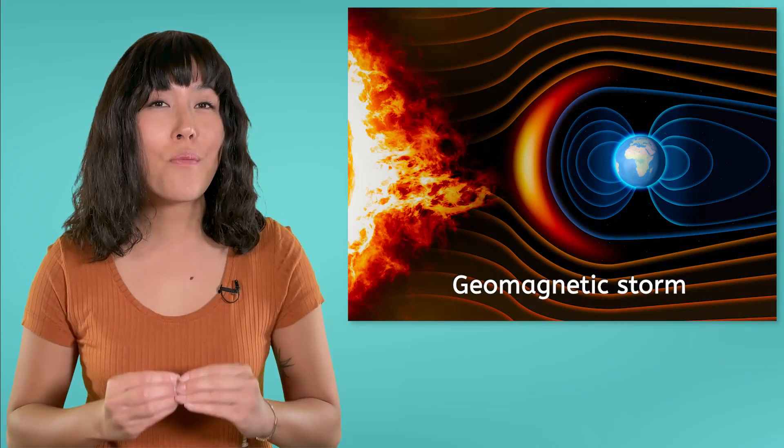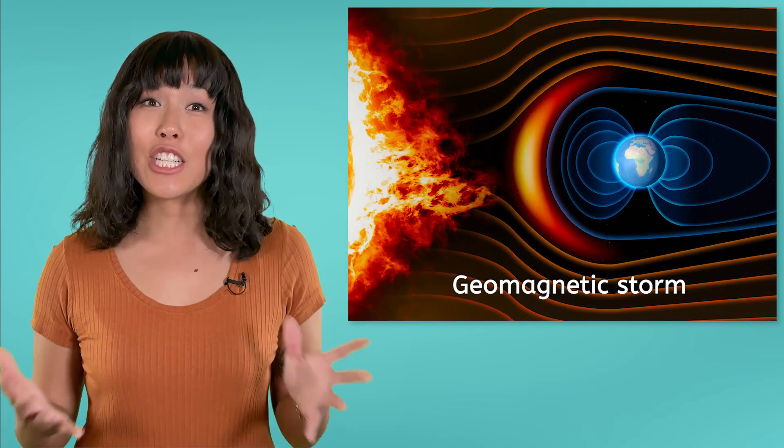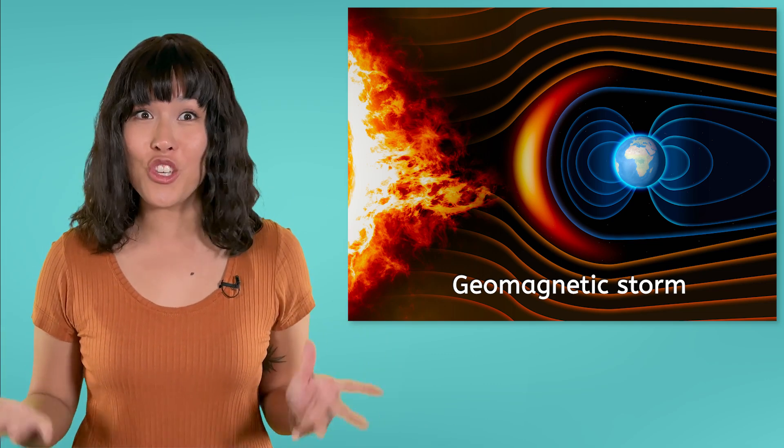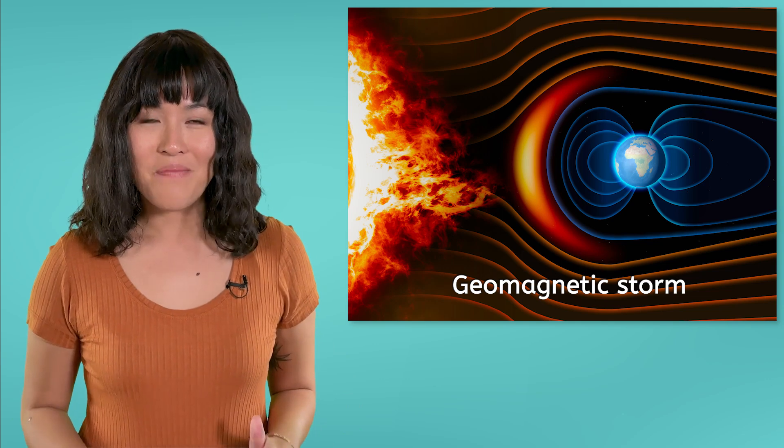During particularly intense periods of solar flare activity known as geomagnetic storms, the increased magnetic activity around our planet can cause disruptions to almost anything that uses electricity. This is due to the fundamental connection between electricity and magnetism that we will explore in more detail in our next lesson.